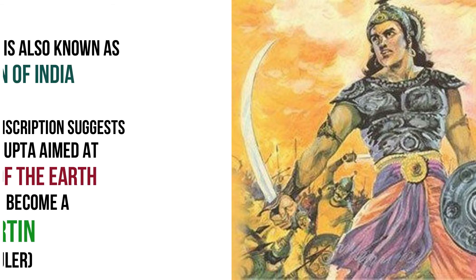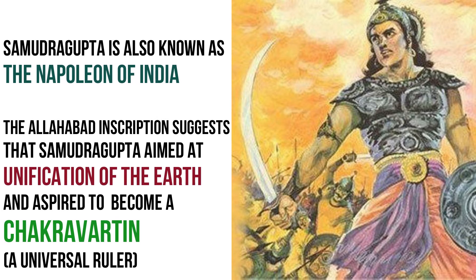If we believe the eulogistic inscription from Allahabad, it would appear that Samudra Gupta never knew any defeat. Because of his bravery and generalship, he is called the Napoleon of India. However, we must be cautious about using Prashastis as sources of information, since they were written only in praise of the ruler and any defeats are often not mentioned.